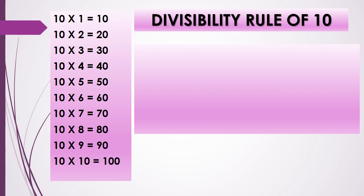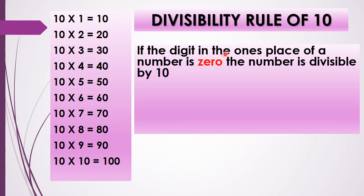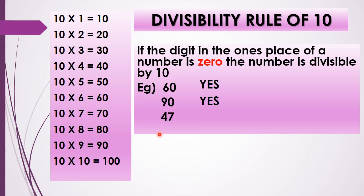The next divisibility rule is the divisibility rule of 10. In the table of 10, when 10 is multiplied with 1, 2, 3, 4, 5 and so on, you can see that the 1's place has 0 — all numbers have 0 in the 1's place. So the rule is: if the digit in the 1's place of a number is 0, then the number is divisible by 10. For example, 60 is divisible by 10, 90 is also divisible by 10. 47 has 7 in the 1's place, so 47 is not divisible by 10.